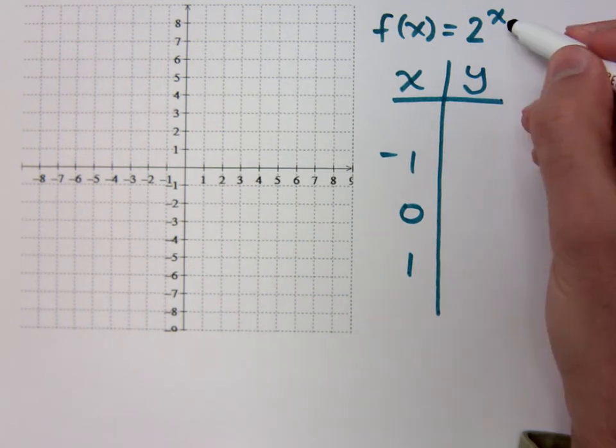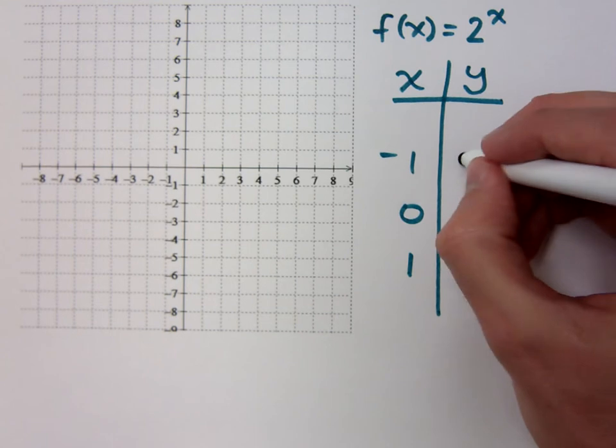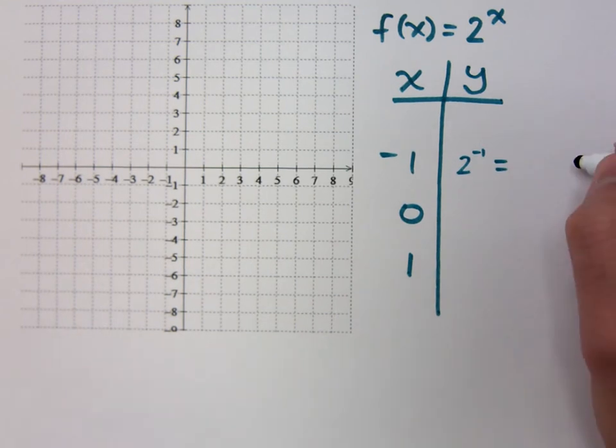If I plug in negative 1, you would get 2 to the negative first. But remember, what do we do with negative exponents? How do we treat those guys? I guess you didn't remember. That's 1 over 2. Negative exponents will make you do the reciprocal.